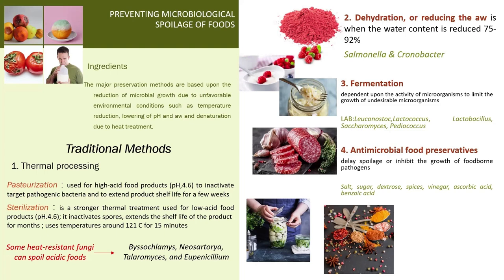To prevent microbial spoilage of food, traditional approaches include methods such as heating, dehydration, fermentation, refrigeration, freezing, and preservatives. In general, thermal processing is based on time-temperature combinations required to inactivate cells of pathogenic microorganisms in a significant number of food products. In addition to reducing spoilage microorganisms, pasteurization is commonly used for high-acid food products to inactivate target pathogenic bacteria and to extend product shelf life for a few weeks.